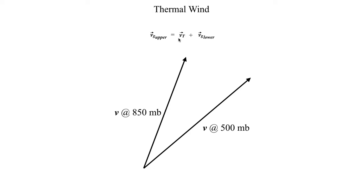Using the tail-on-tip method, the tail of the thermal wind goes on the tip of the geostrophic wind at the lower level, and then the thermal wind vector's tip goes toward the resultant. So if we just did the lower vector plus the thermal wind vector, then the resultant — the end result of the addition — would look like this geostrophic wind vector at the upper level. Put in simpler terms, to find the thermal wind given a geostrophic wind vector at a lower and upper level, simply take the tail of the thermal wind, attach it to the tip of the geostrophic wind at the lower level, and then connect that vector with the tip of the geostrophic wind vector at the upper level.